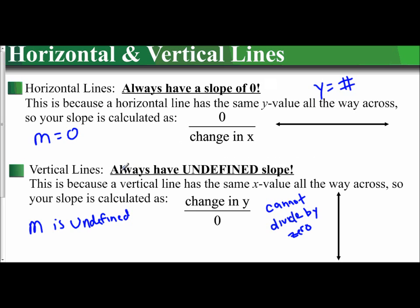And just like before, vertical lines are going to be of the form x equals a number. So y equals a number is horizontal lines. x equals a number is vertical lines.